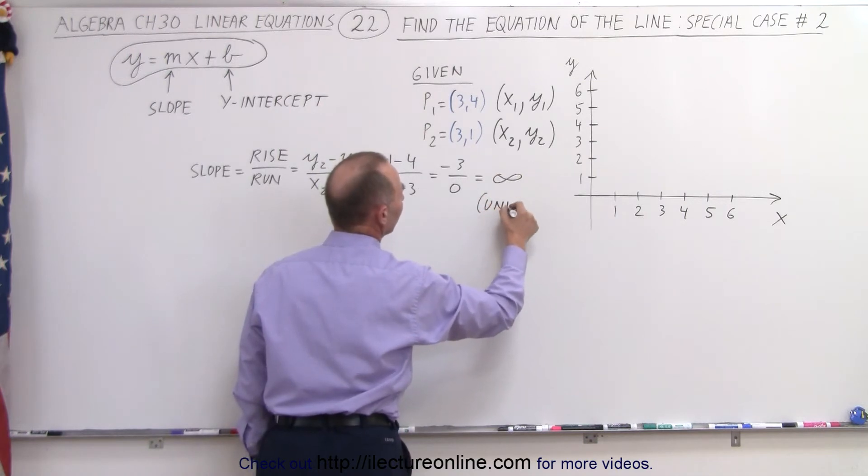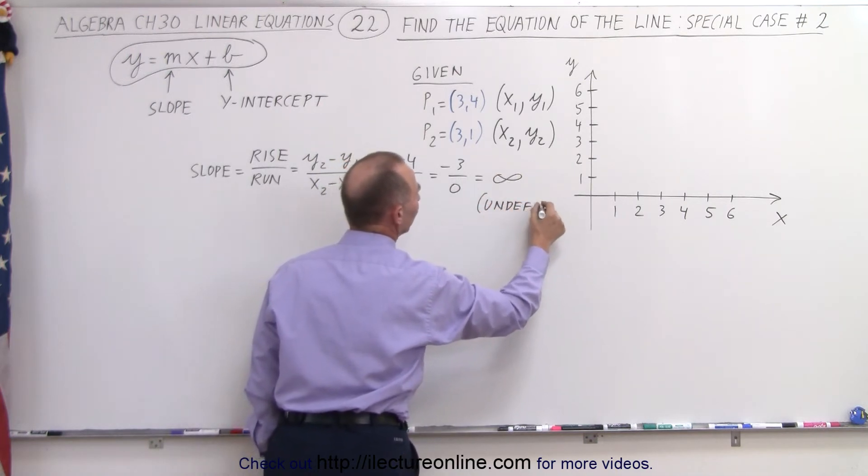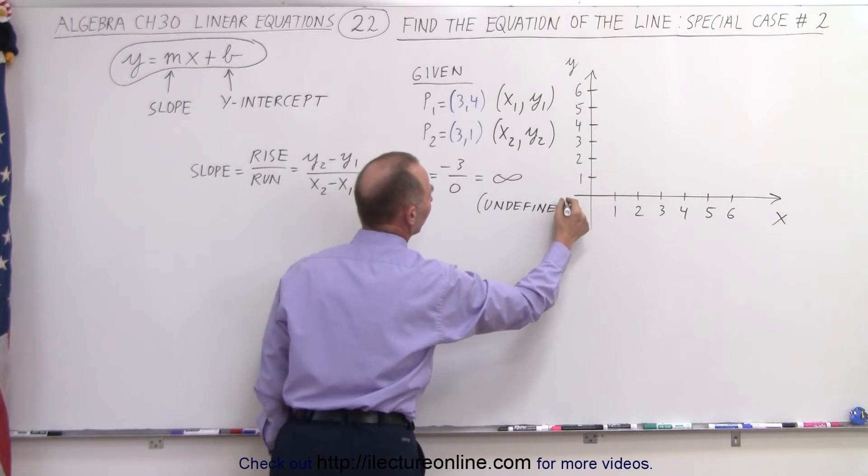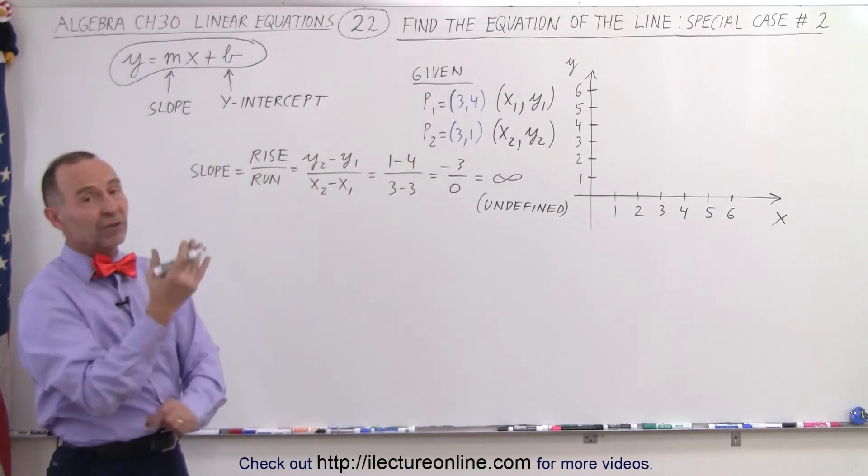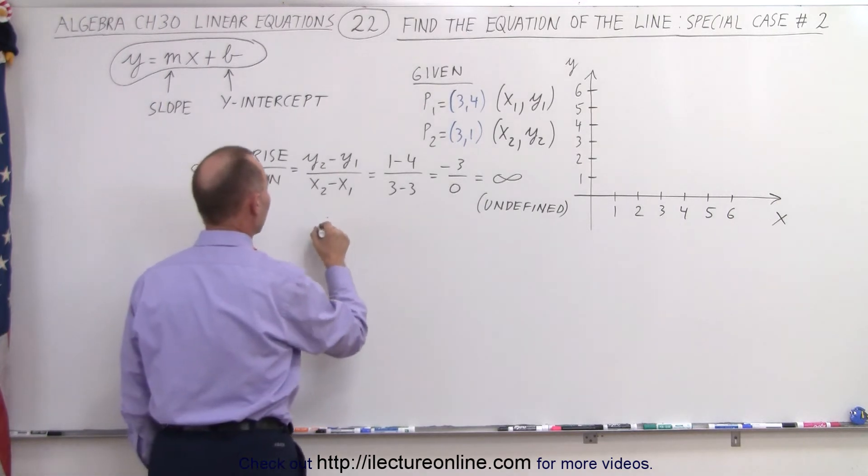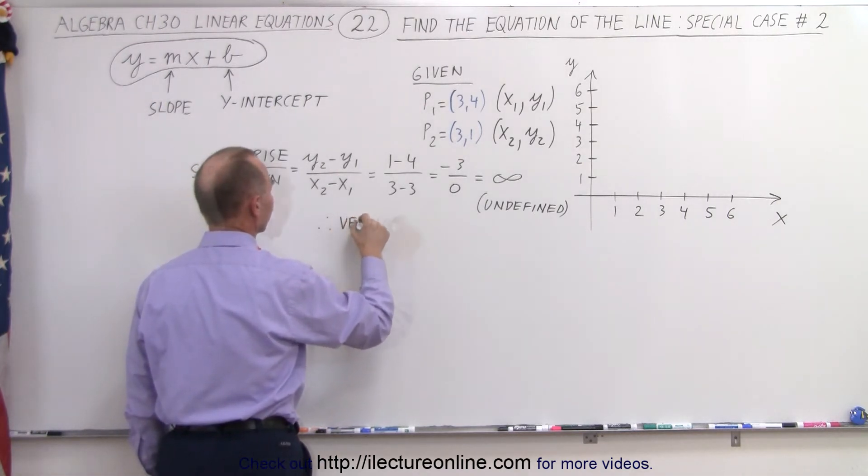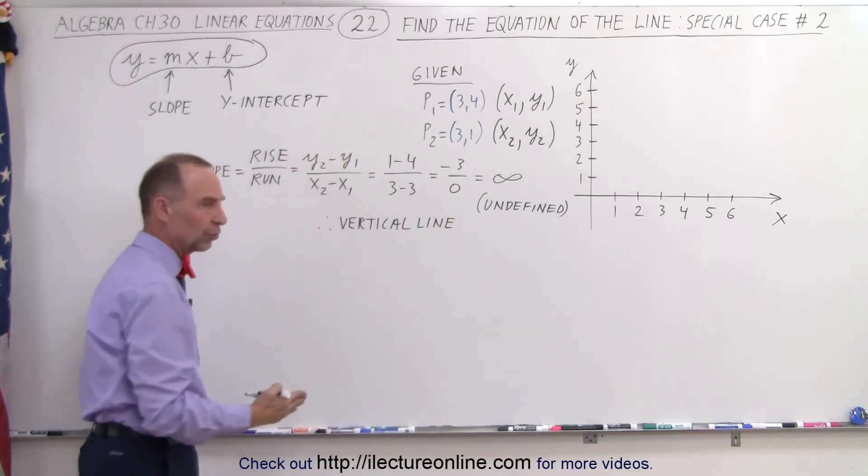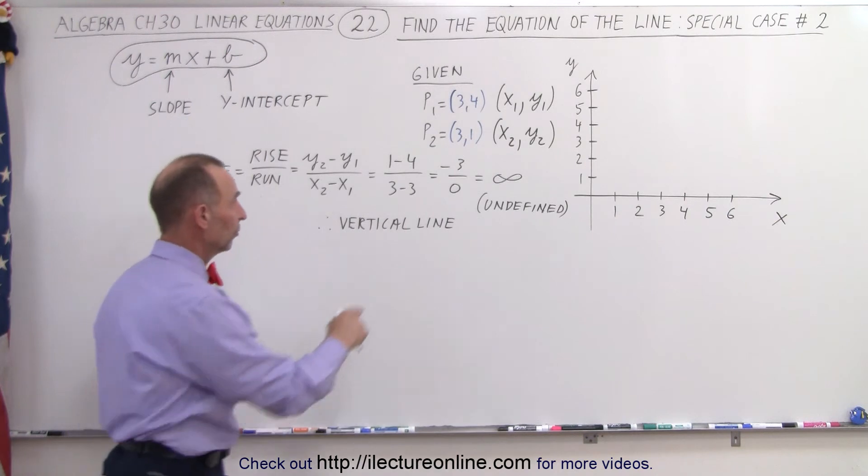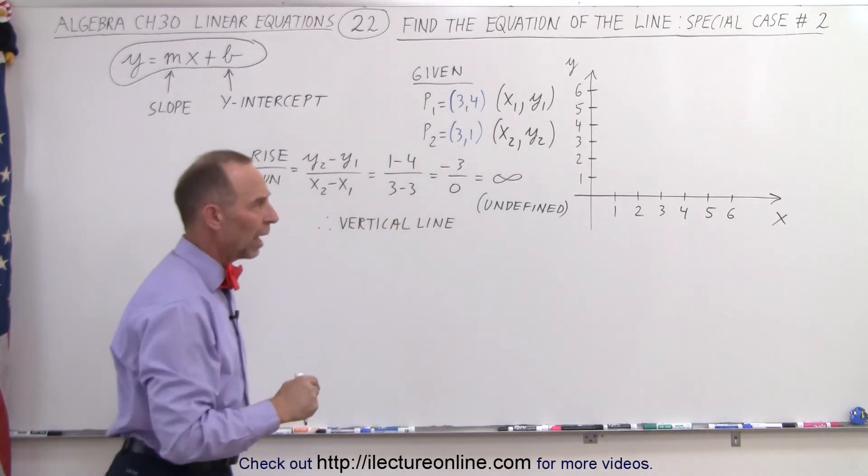Another way of stating that, it's undefined. We cannot divide by 0. Which means we have an infinite slope, and an infinite slope means we have a vertical line, because vertical lines have an infinite slope. They go straight up and down, there's only a rise, there's no run. Zero run means a vertical line.